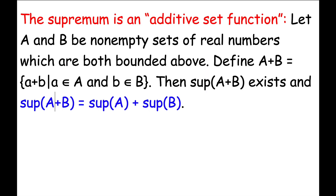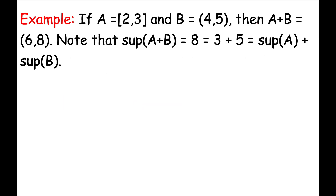Our last task of this video is to understand why the supremum is what you would call an additive set function on sets of real numbers which are bounded above. Let capital A and capital B be non-empty sets of real numbers which are both bounded above. Define capital A plus capital B to be the set of all possible sums of elements from capital A and capital B — the set of all little a plus little b as little a varies over capital A and little b varies over capital B. Then the sup of capital A plus capital B exists and it equals the sum of the sup of A with the sup of B. Before looking at the proof, let's consider a simple example. Suppose capital A is the closed interval from 2 to 3 and capital B is the open interval from 4 to 5. You can double check that the set capital A plus capital B is the open interval from 6 to 8. Note that the sup of capital A plus capital B is 8, which is 3 plus 5, which is the sup of capital A plus the sup of capital B.